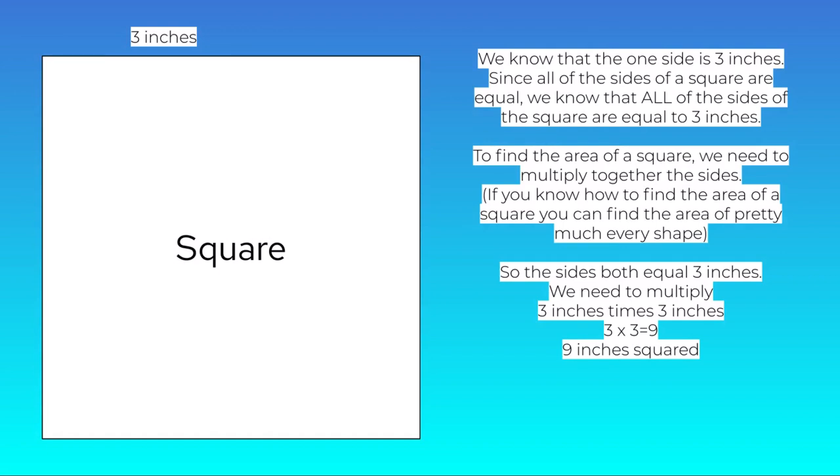So now we're looking at a square. We know that one side of the square is equal to 3 inches. Since all of the sides of the square are equal, we know that all of the sides of the square are equal to 3 inches.